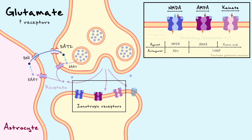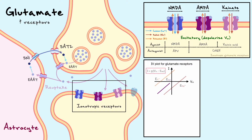When glutamate binds and opens each channel, the three mediate an inward current that depolarizes the cell when the membrane potential is negative. The inward current from the three channels is composed of a potassium and sodium component, just like the nicotinic acetylcholine receptor. One important detail is that the NMDA receptor, contrary to the AMPA and kainate receptors, is highly permeable to calcium. When considering the IV curve for these receptors, the reversal potential for each is near zero, between the reversal potentials of sodium and potassium.